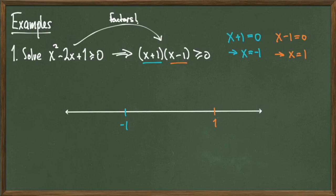The problem is asking us to find when x² - 2x + 1 is greater than or equal to 0 — when is this polynomial a non-negative number? Since -1 and +1 are roots, plugging them in gives us zero. We need to test other numbers to see if they give positive or negative values. This strategy is commonly referred to as the test point method.